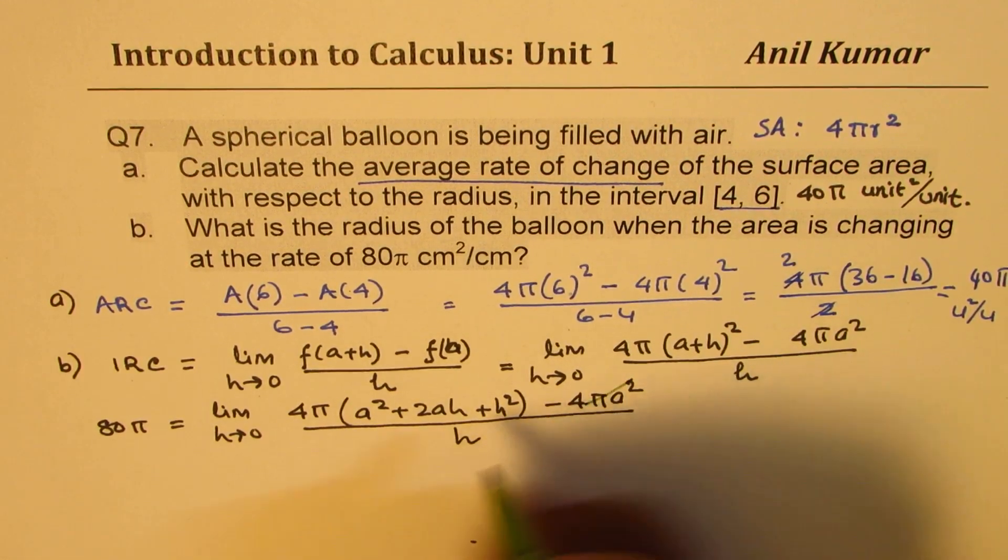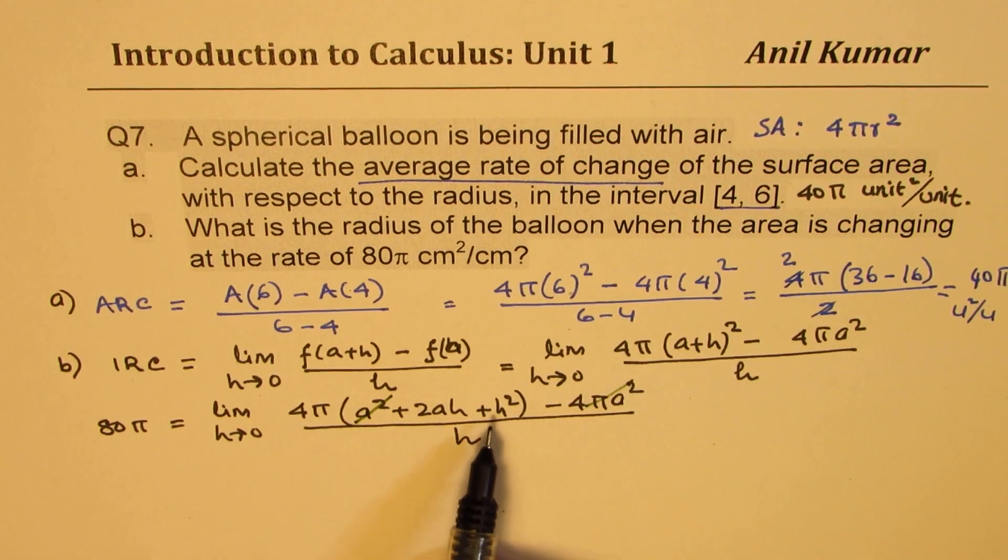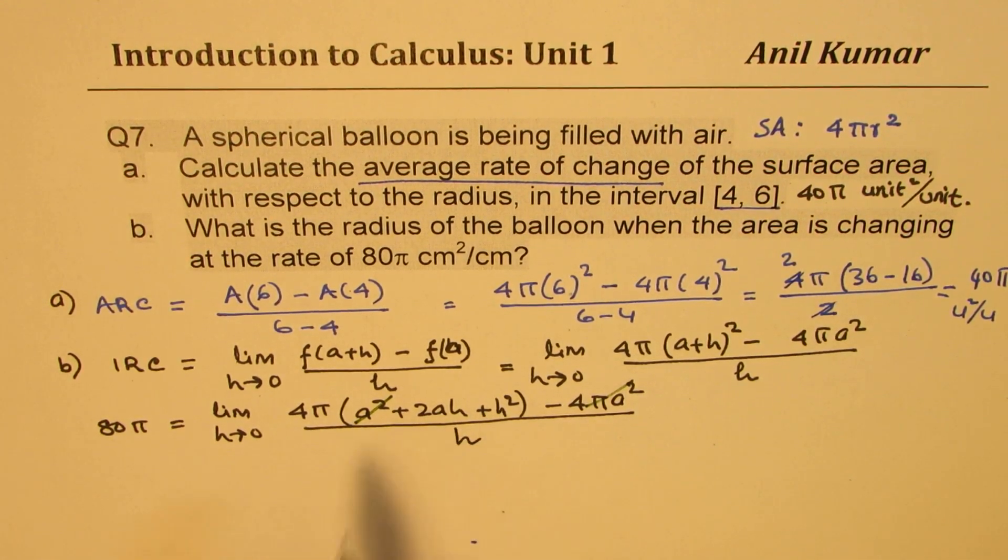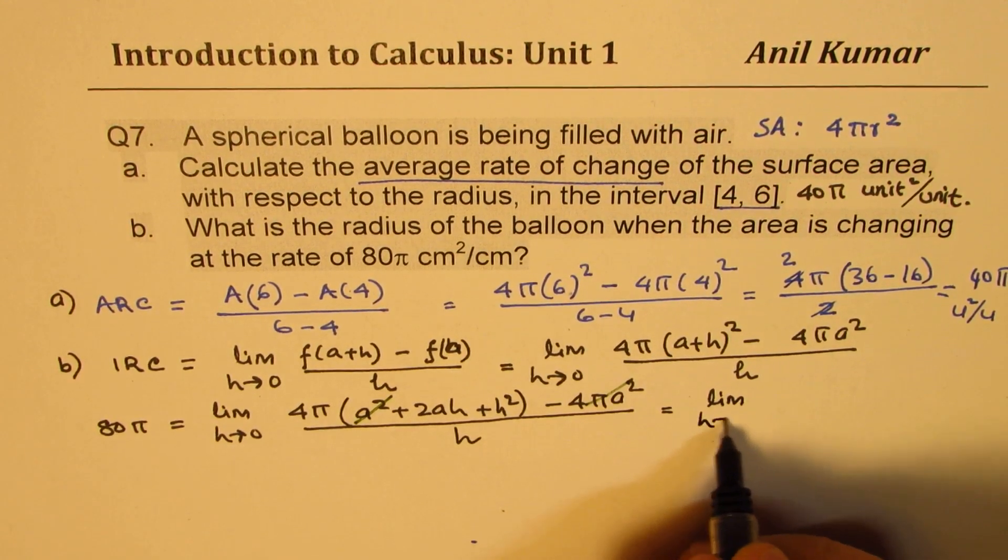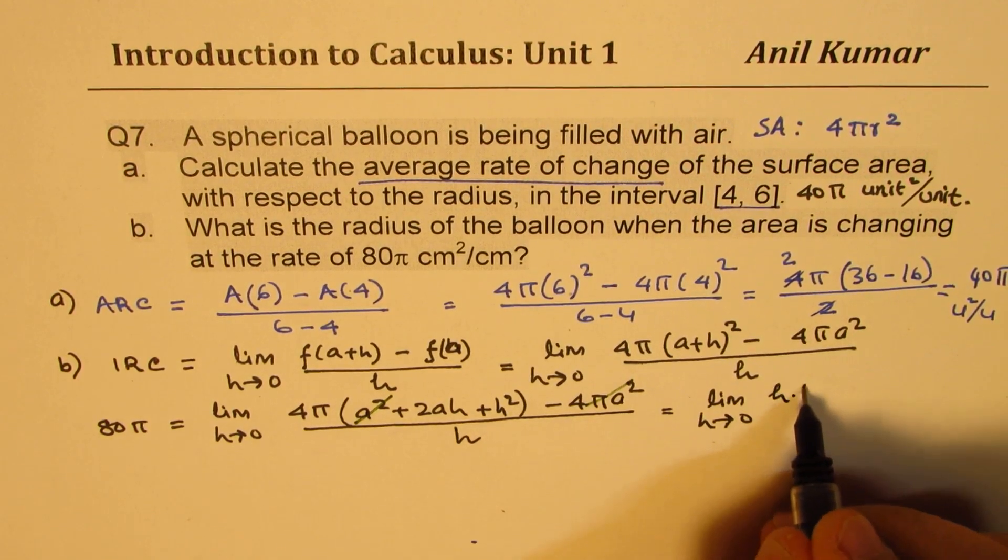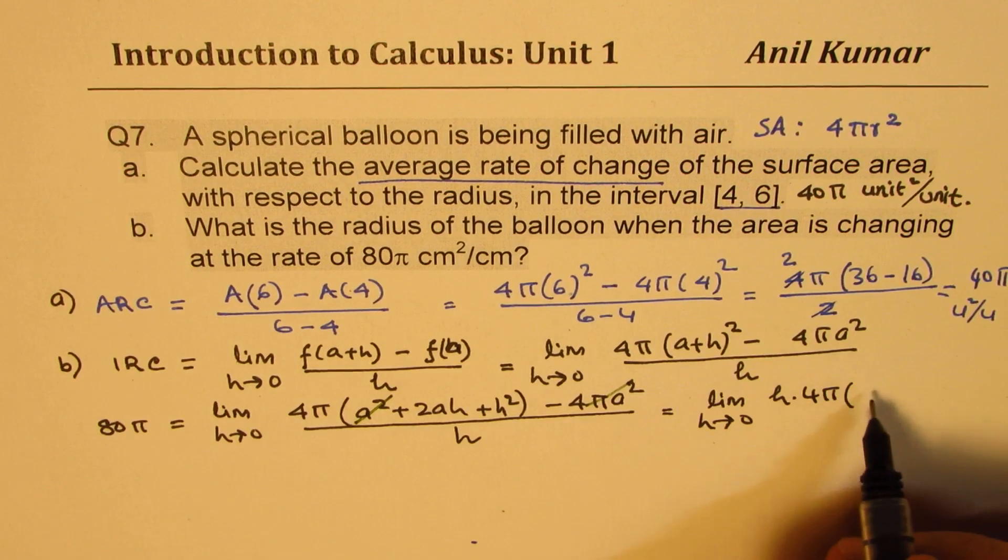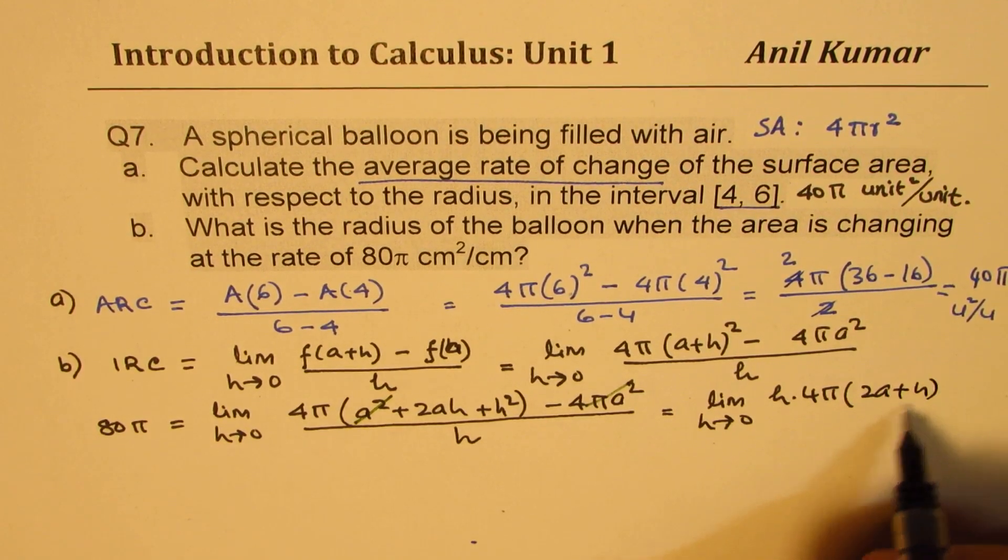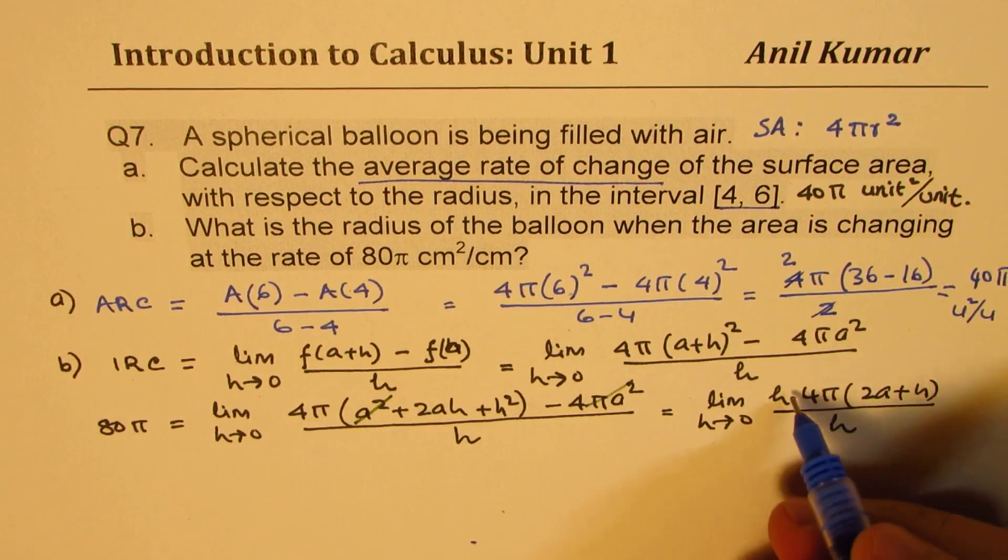So 4πa² cancels with your first term, then from this we can take h common. So we have limit h approaches 0, h times 4π and we are left with 2a + h over h. So this h also cancels.